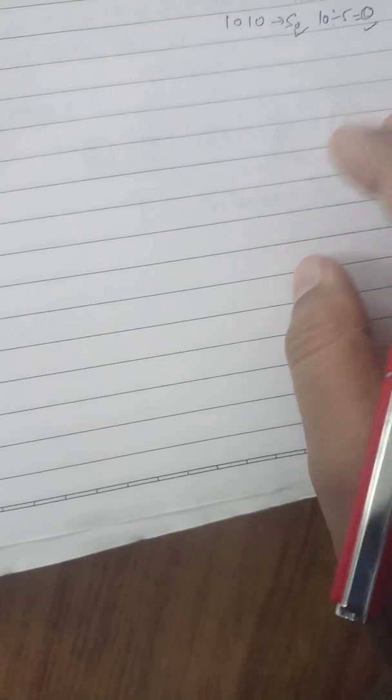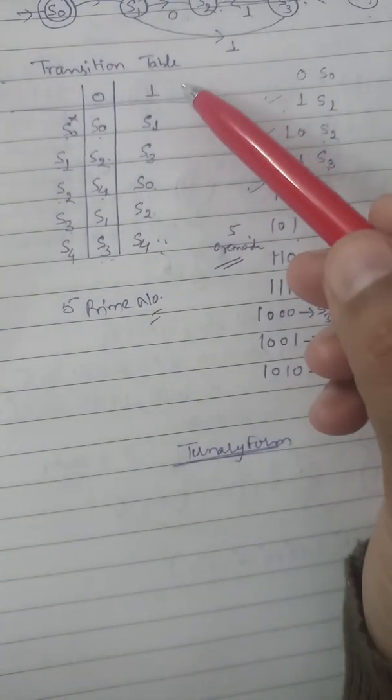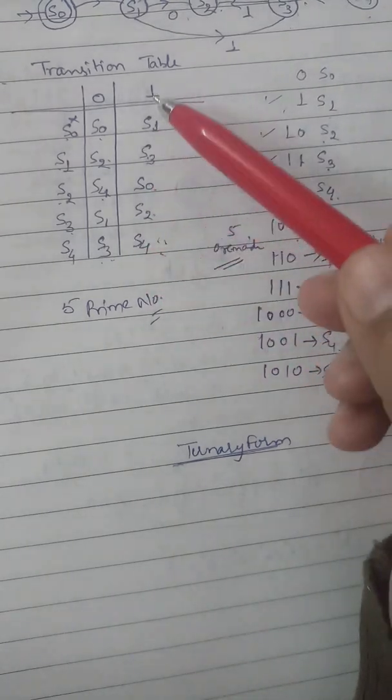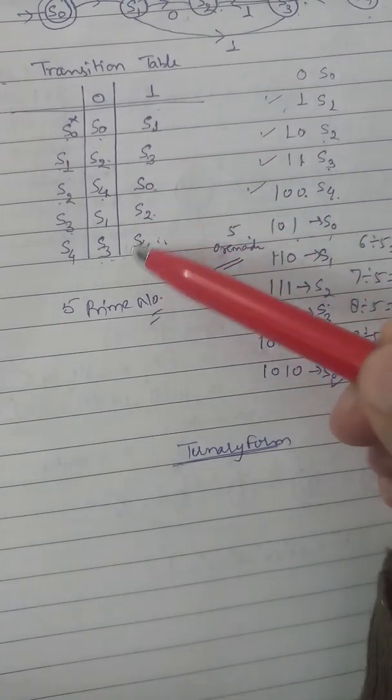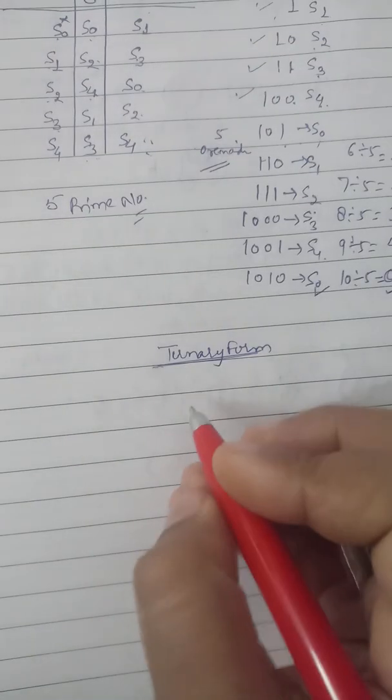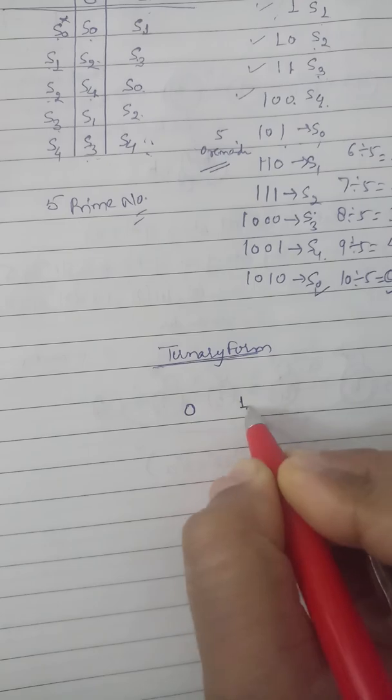Now suppose we want to write the transition table in ternary form. Up till now we have been writing in binary form, but if we want to write in ternary form — taking the same example of divisibility by 5 — then the transition table will have three columns: 0, 1, and 2, for the three ternary digits.